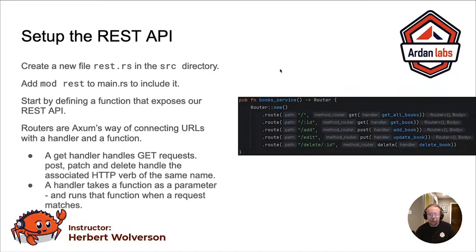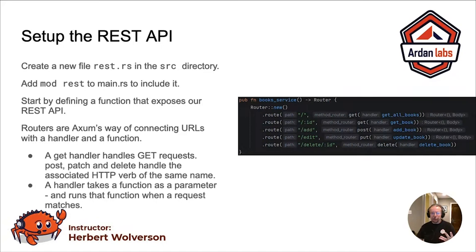In this case, we want the root of our router to fire a get all. For a get request, the verb, we call get all books, which we'll write in a moment. Likewise, for a get book, which will just be one book, you've got a slash colon and then an ID number, and we represent that as colon ID. You'll have a look at how that works in a moment.